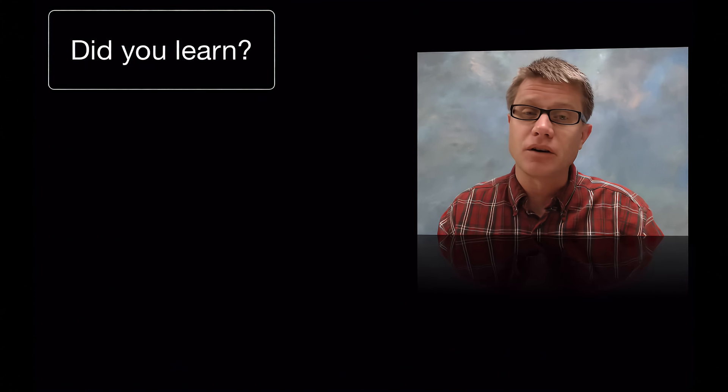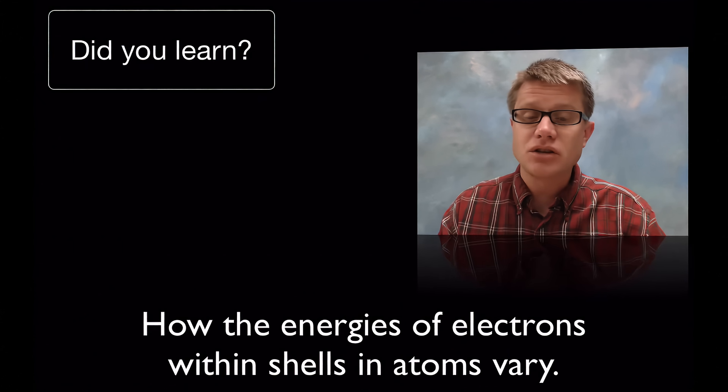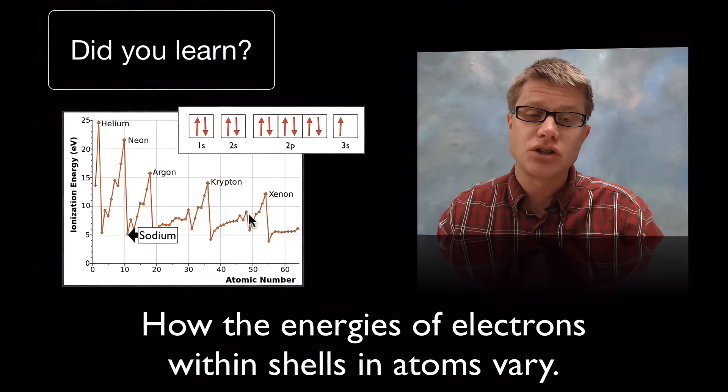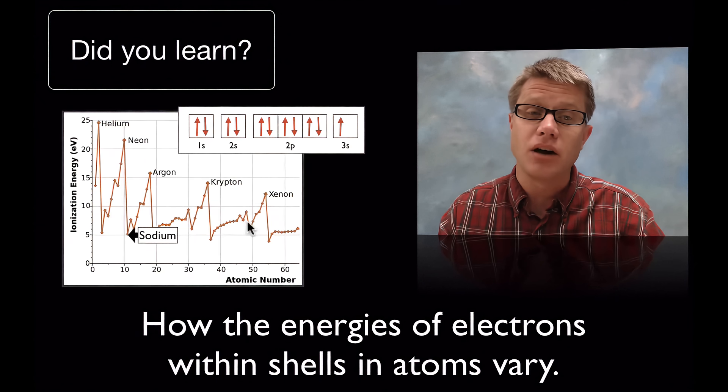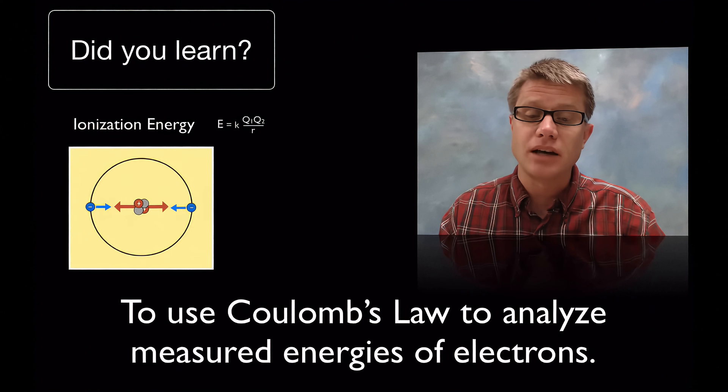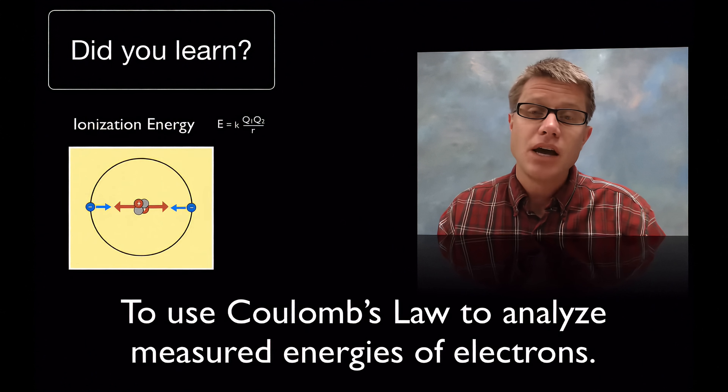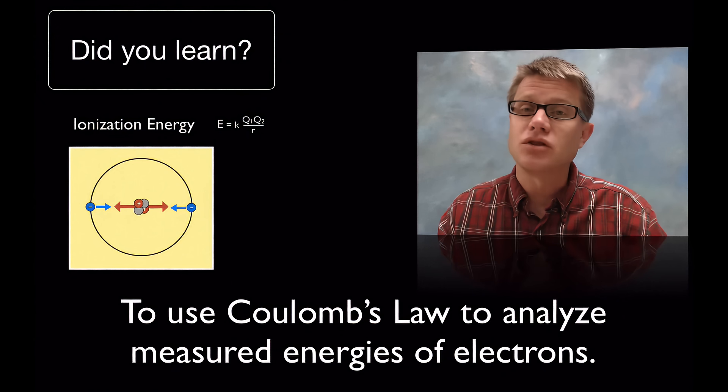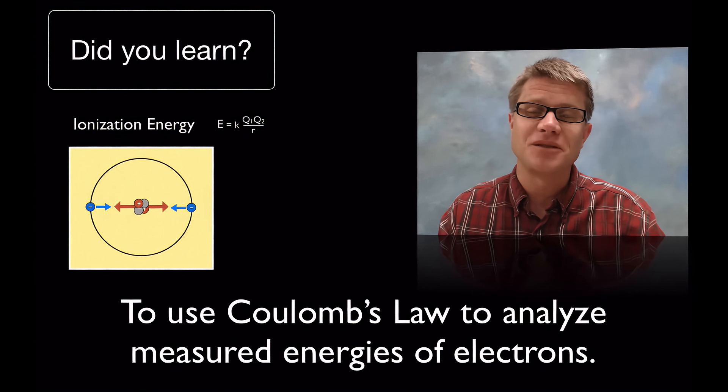And so what you should have learned is how the energies of electrons vary within shells of atoms. And so I could point you to this ionization energy chart. And as we walk through that, that should help. And the other thing you should have learned is that we could use Coulomb's law to analyze measured energies of electrons. And that works great. But it doesn't explain orbitals. And so we have to modify our theory a little bit. And I hope that was helpful.